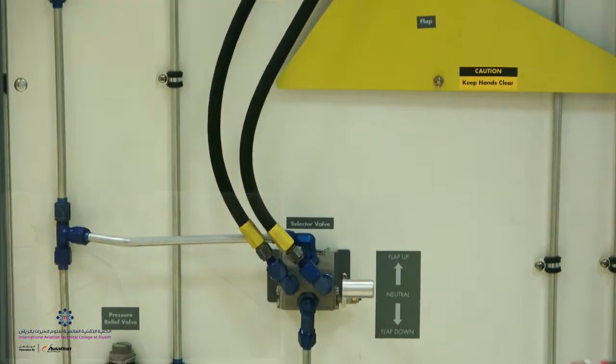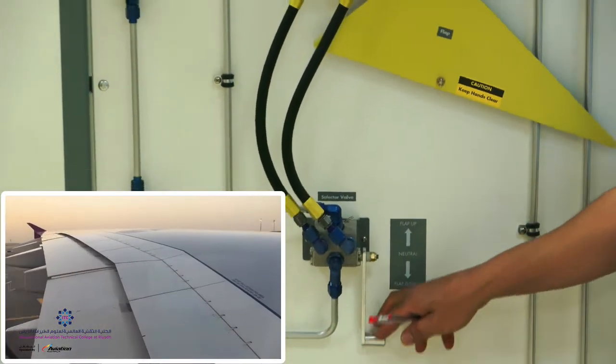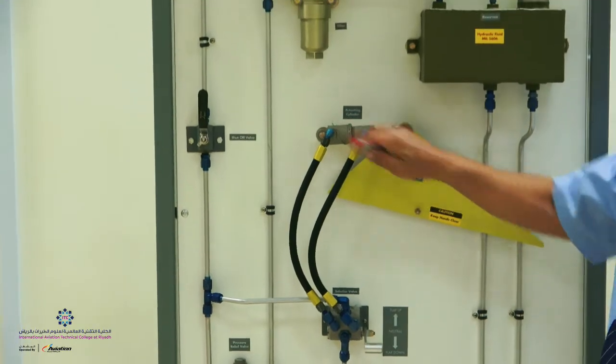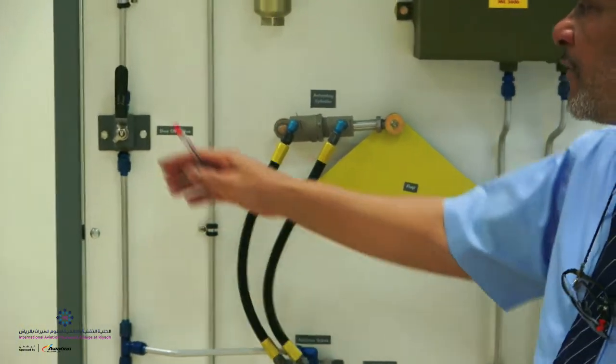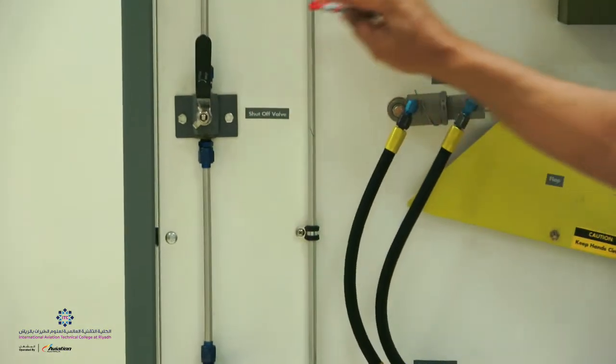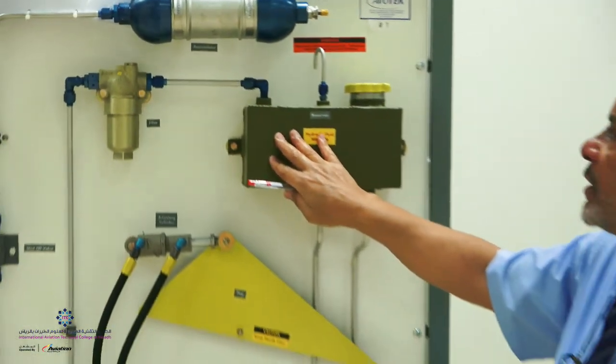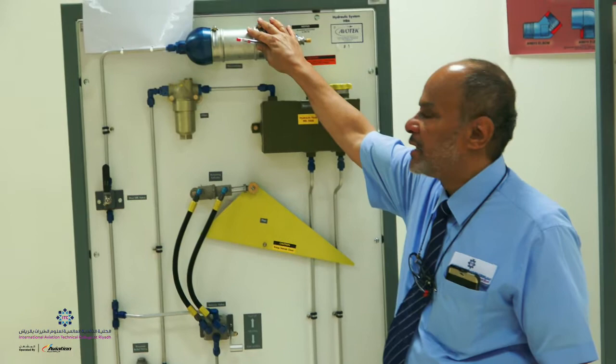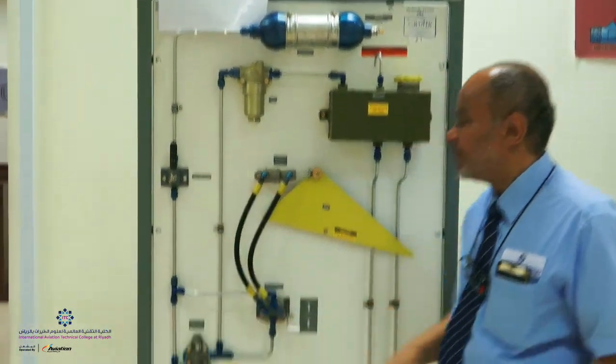In this case, we have a flap shown here, a flight control named the flap, which will operate using the selector valve, the actuator that operates the flap, a shut-off valve to isolate the system. We have a filter to clean the fluid before it goes back to the reservoir, and we have a unit here known as an accumulator as an emergency backup.